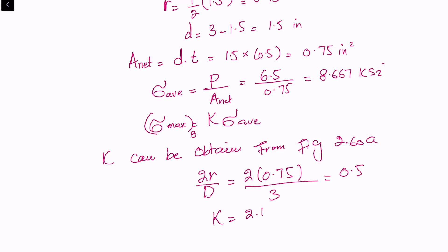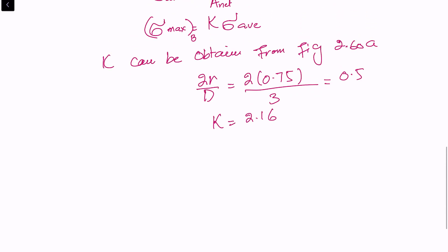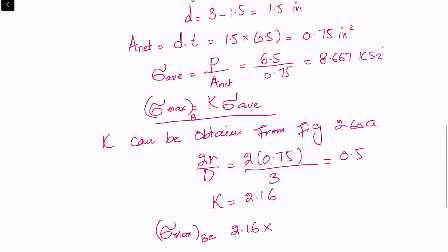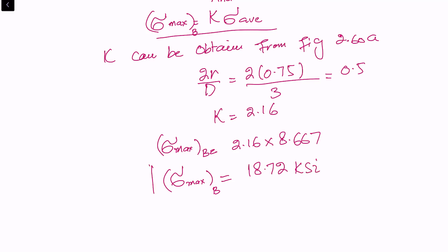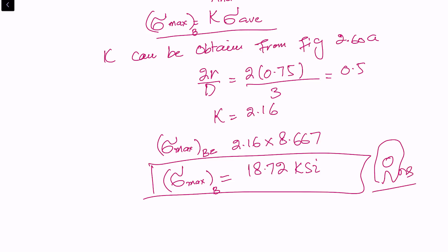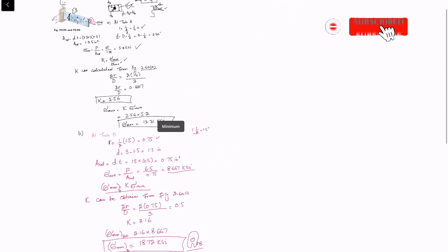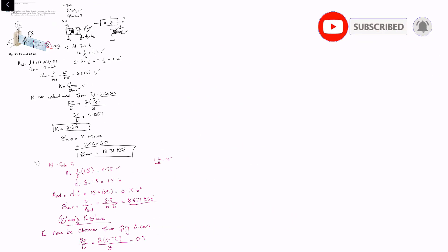K equals 2.16. Putting it into the formula: sigma max at point B equals 2.16 multiplied by sigma average of 8.667, which gives sigma max at hole B equal to 18.72 ksi. This is the final answer. If you have any questions, you can ask in the comment section. Thank you for watching.